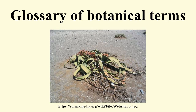Bristle: a straight stiff hair or upper part of an awn. Brochidodromous: leaf venation in which the secondary veins do not terminate at the leaf margin, but are joined in a succession of prominent arcs. Bryophyte: informally, a collective term for mosses, hornworts and liverworts. Formally, these plants are placed in three separate divisions: hornworts, liverworts and mosses.